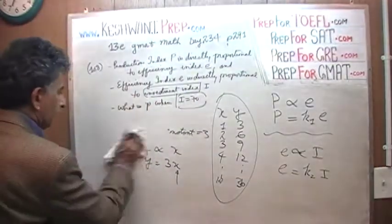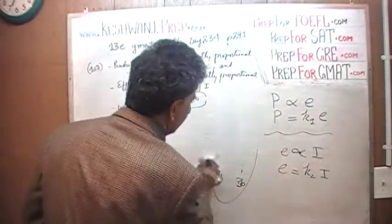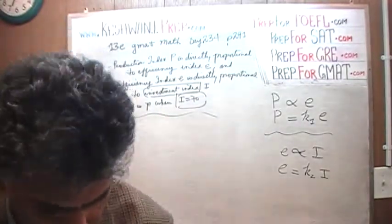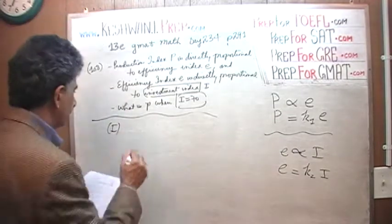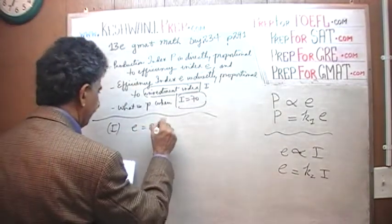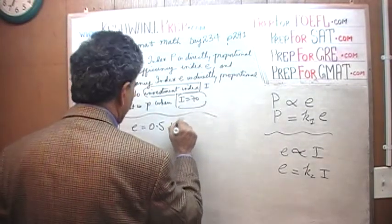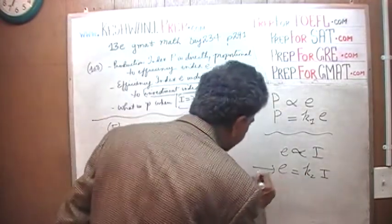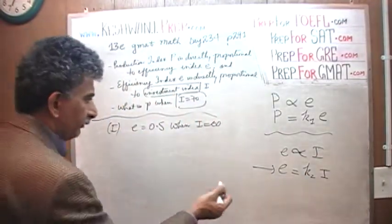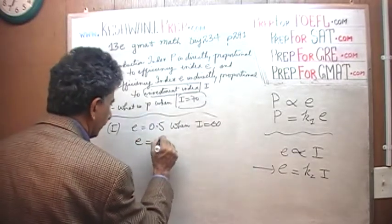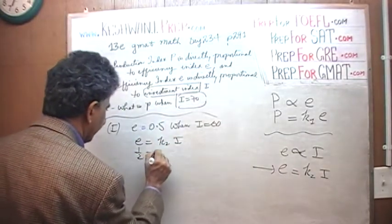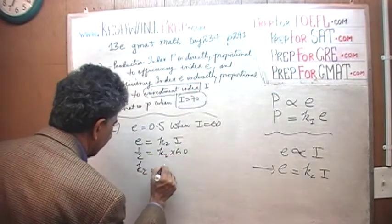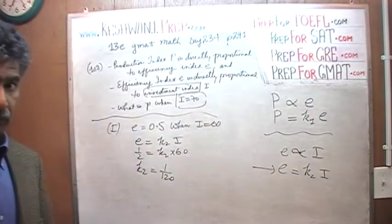Now that we understand the question, let's see what they tell us in the first statement. In the first statement they tell us that when E is half when I equals 60. Well, we can use this equation right here. We can substitute the value of E, E equals half, and K2 times I, which is 60. And therefore, the second constant must be 1 over 120. So we have the value of the second constant now.